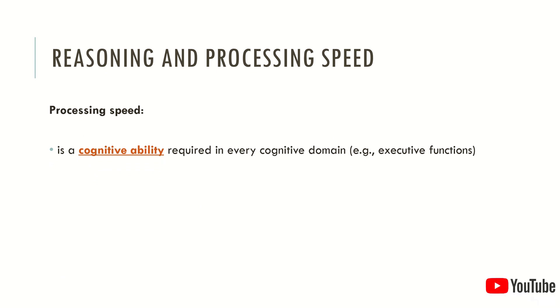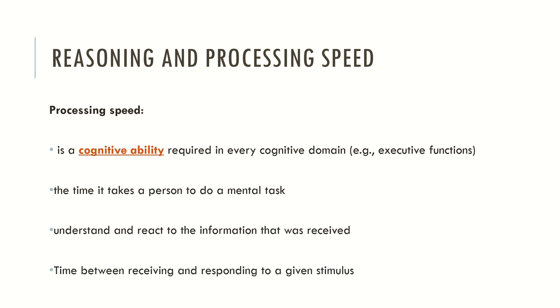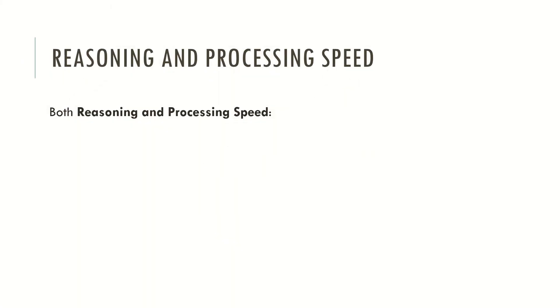Processing speed is the cognitive ability required in every cognitive domain, because in every mental operation that we use in our daily life, if we do not process our mental contents quickly, as we saw in the previous presentation about memory, these mental contents tend to be forgotten because they are not encoded. So processing speed is very important in the encoding process. Processing speed may also be described as the time it takes a person to do a mental task, or the time that an individual takes to understand and react to a given information that was received. It may also be viewed as the time between receiving and responding to a given stimulus.